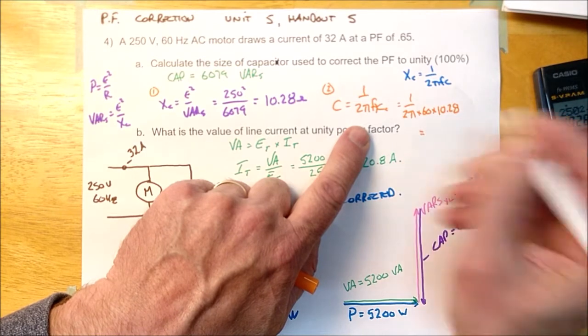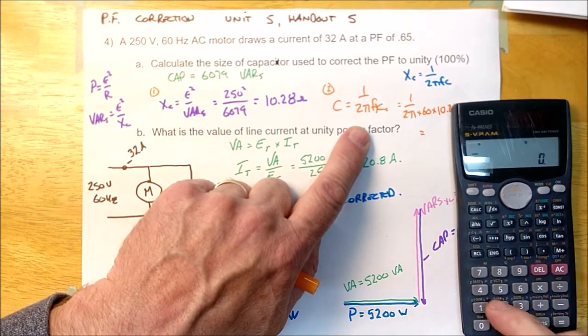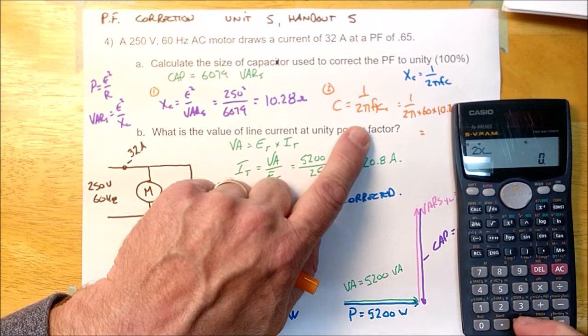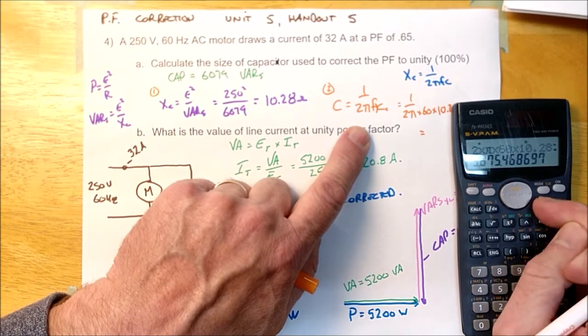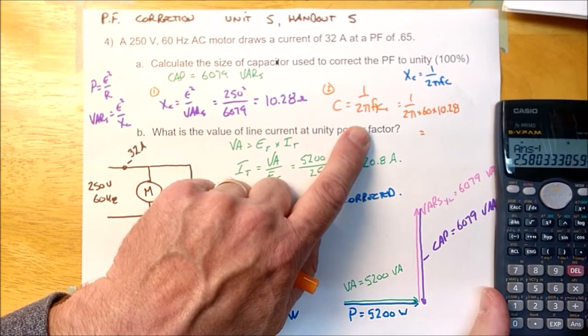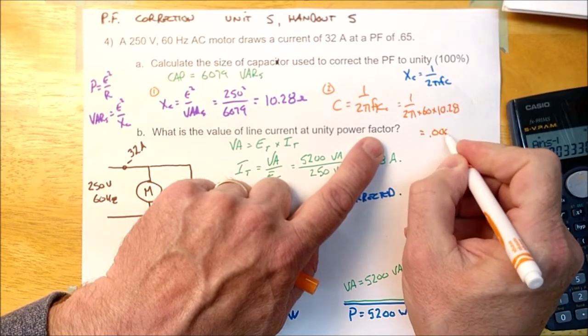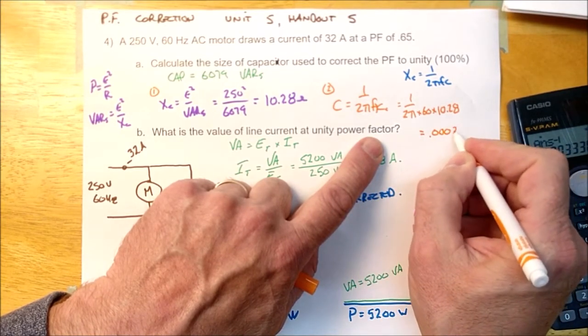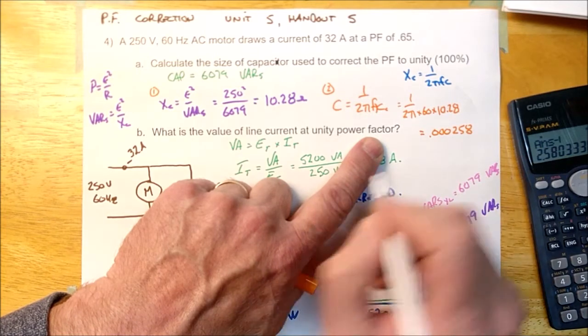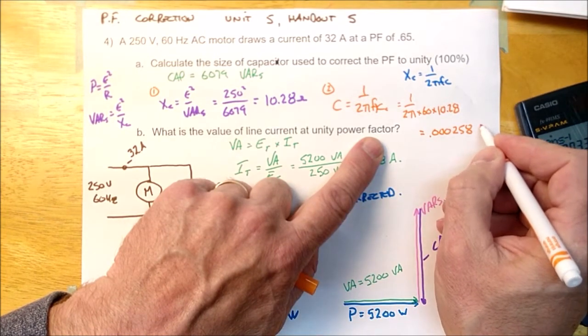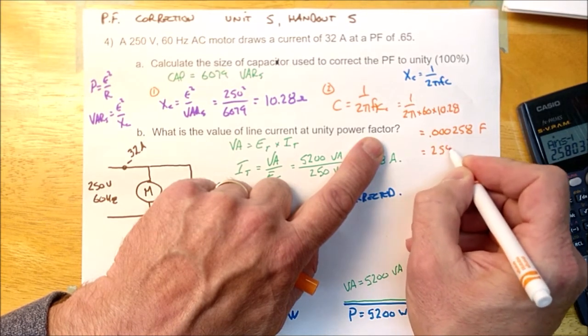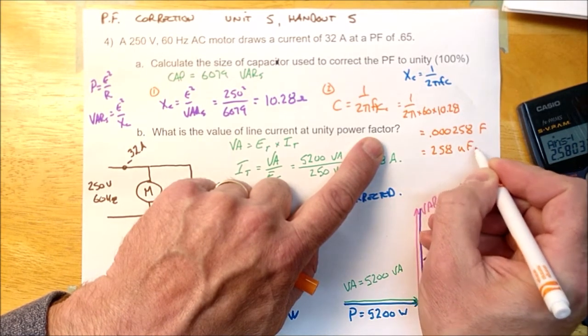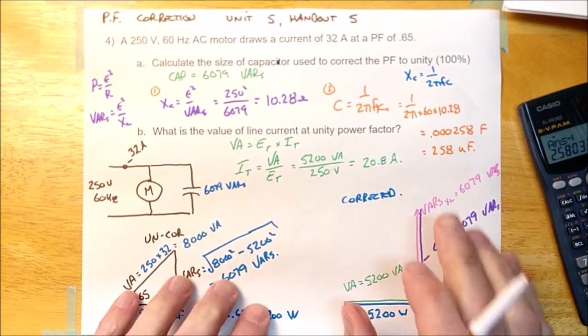So it's 1 over 2 times π times 60 times, this is supposed to be XC. 1 over 2πFXC if I'm solving for C. So 10.28, so I'm going to calculate that. 2 times π times 60 times 10.28 equals 1 over X equals. And according to this, it says 0.000258 farads, which is 258 microfarads.